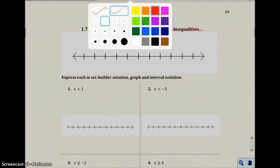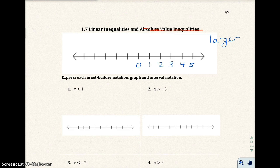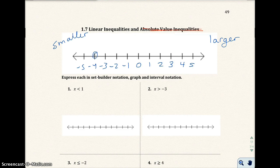Let's go ahead and talk about the number line to refresh our memory from the P chapter. Remember that numbers on the right hand side of the number line are always going to be larger than the numbers on the left hand side. For example, negative 4 and negative 2 — negative 4 is the smaller number because it's on the left hand side.